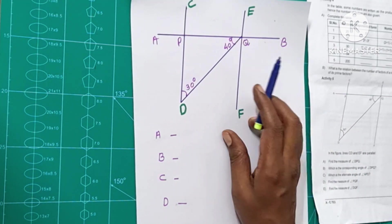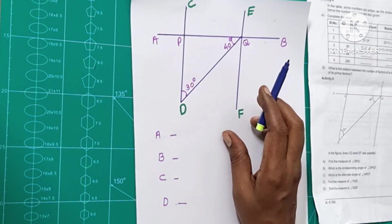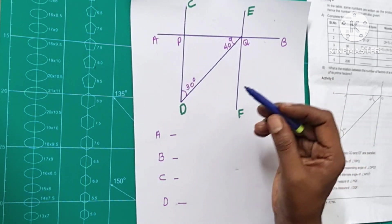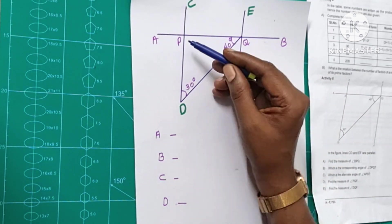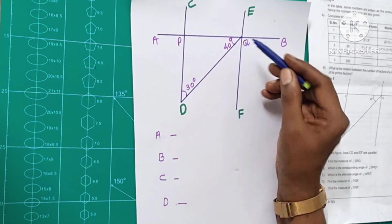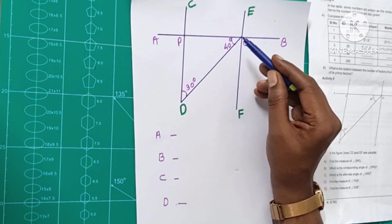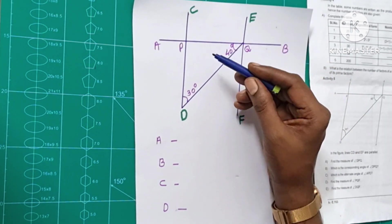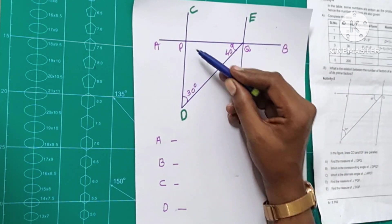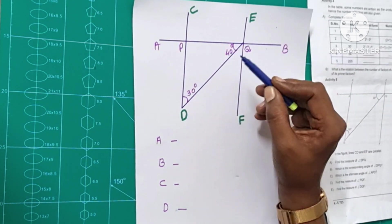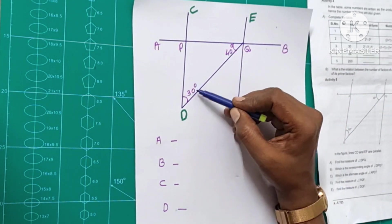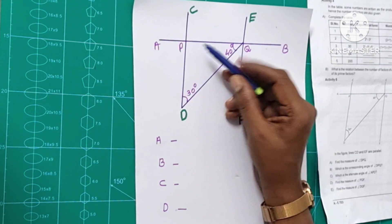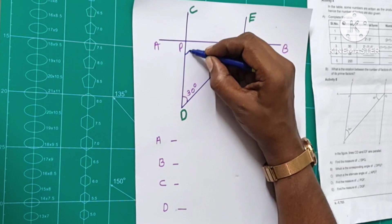Find the measure of angle DPQ. What is DPQ? D-P-Q. If you consider angle DPQ, we have a triangle here with angles 30, 40, and 20. So how much is it here? 110 degrees.